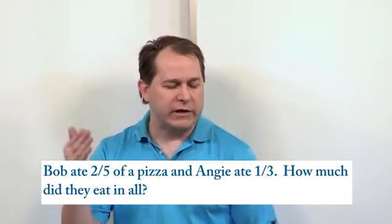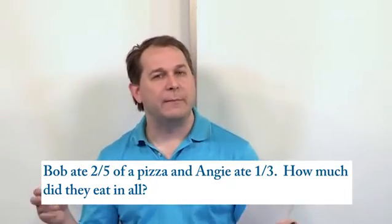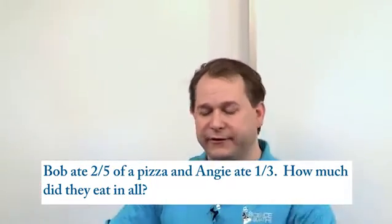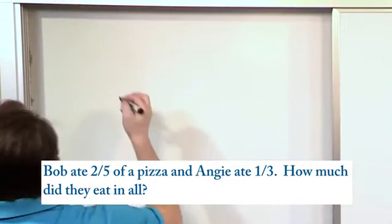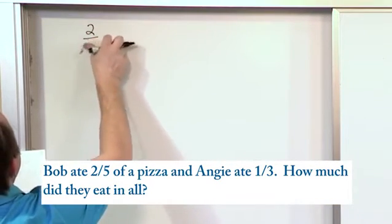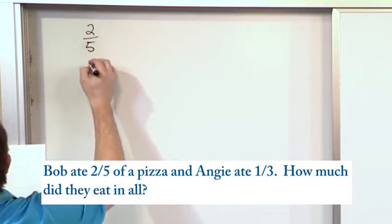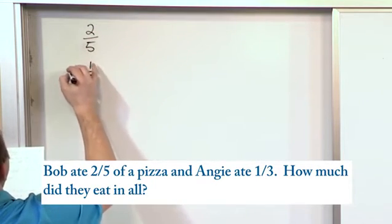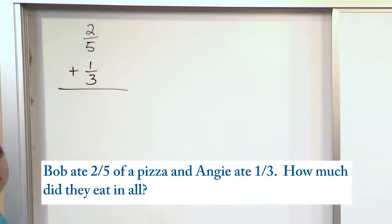We know Bob ate some, we know Angie ate some, we're trying to figure out how much in all. That means we need to add these two fractions together. So the fractions we have here are Bob is eating two-fifths of the pizza and Angie is eating one-third of the pizza. So we're adding these together and we want to know how much did they eat all together.